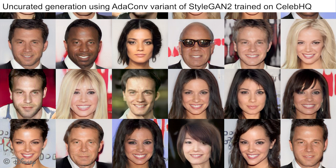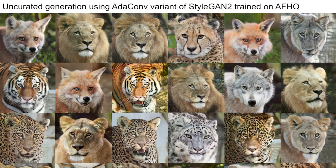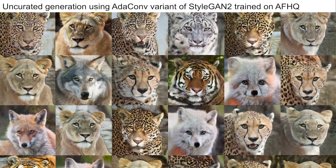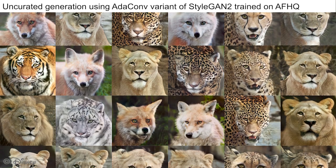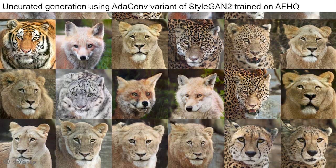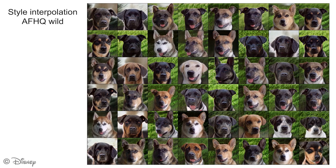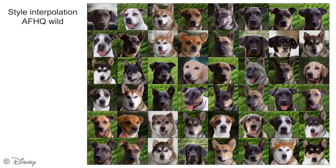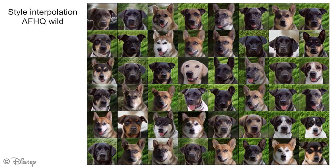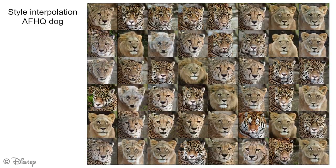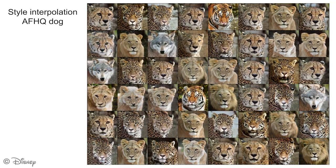These datasets range from FFHQ and CelebHQ, which have tens of thousands of images, to small datasets such as AFHQDog and AFHQWild, which have only a few thousand images. AdaConv shows good results in all such scenarios. Our new method also allows for smooth interpolations in the latent space of these generative models, an effect that is demonstrated here on these three datasets.